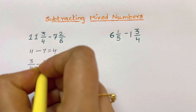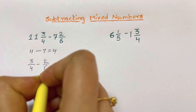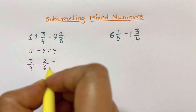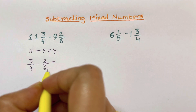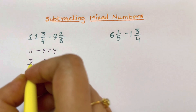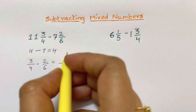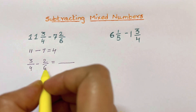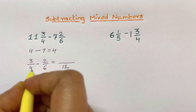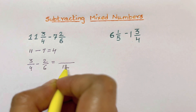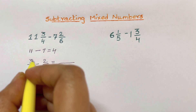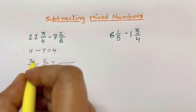3 over 4 minus 2 over 6 — you need to make the denominators common so that you can subtract the numerators. The LCM is 12. To make this denominator equal to 12, you need to multiply by 3, and the same thing you need to multiply with the numerator as well.